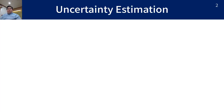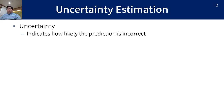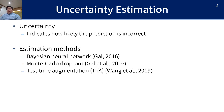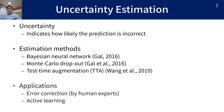In machine learning, uncertainty is a measure that indicates how likely a prediction is incorrect. There are various methods for estimating uncertainty, and it has been used for various applications such as error correction and active learning.